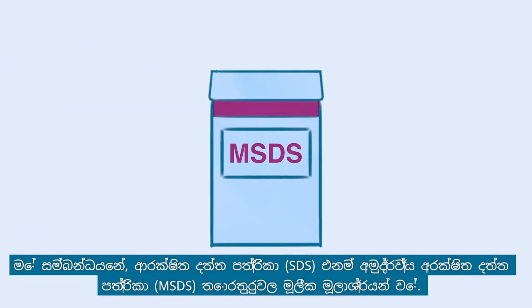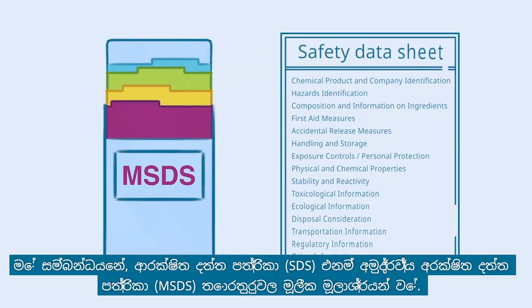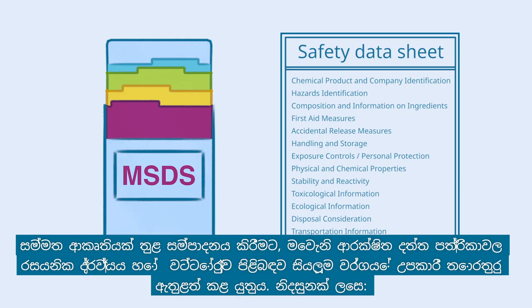In this regard, safety data sheets, also known as materials safety data sheets, are the key source of information. Compiled in a standardized format, these safety data sheets contain all kinds of helpful information about the chemical substance or formulation.